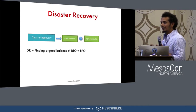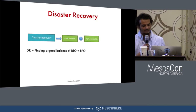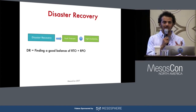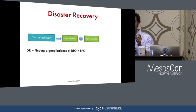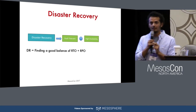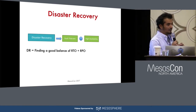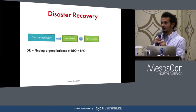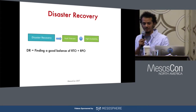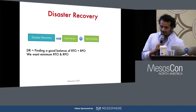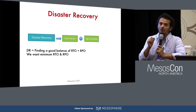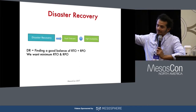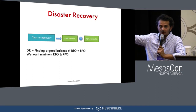DR is basically finding a good balance of RTO and RPO. RTO is the recovery time objective — the shortest amount of time in which you can actually bring your application back up. RPO is the recovery point objective — how much data loss you can suffer before bringing your application back up. Technically, when a disaster happens, we want to bring your application up as soon as possible with minimal RTO and RPO, without any data loss. Remember these two metrics — RTO and RPO. We want to get as close to zero as possible.